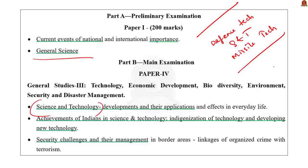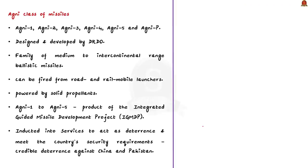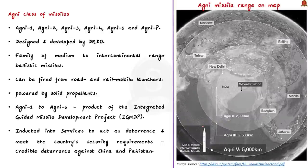The syllabus relevant to this article is displayed on the screen. First, let us start the discussion with the Agni class of missiles. Agni class missiles are the centerpiece of India's nuclear launch capability. So far we had five missiles, and now we have added another one called Agni P. Let us discuss Agni 1 to Agni 5. These missiles are designed and developed by DRDO.